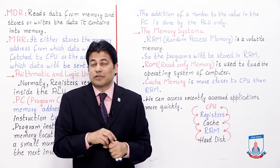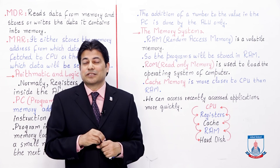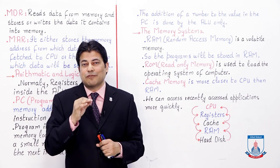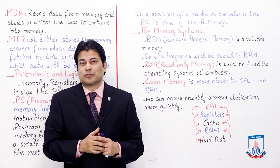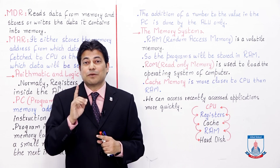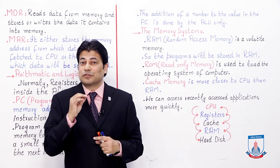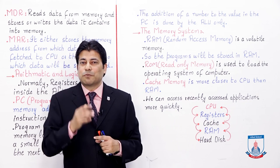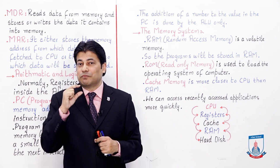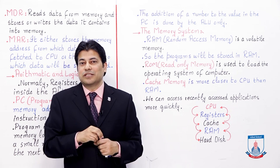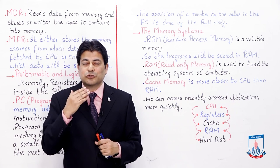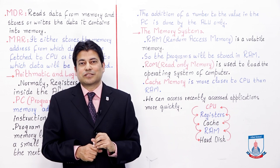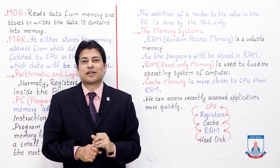Today's lecture was very important for Chapter 1. We first talked about output devices, then processing, then which units are available inside the CPU and how they work. Most importantly, we covered registers — MDR, MAR, and Program Counter — then memory units including RAM, ROM, cache, and the memory hierarchy inside the computer. Keep these concepts clear as they will be very useful in the future. See you in the next lecture, take care, Allah Hafiz.